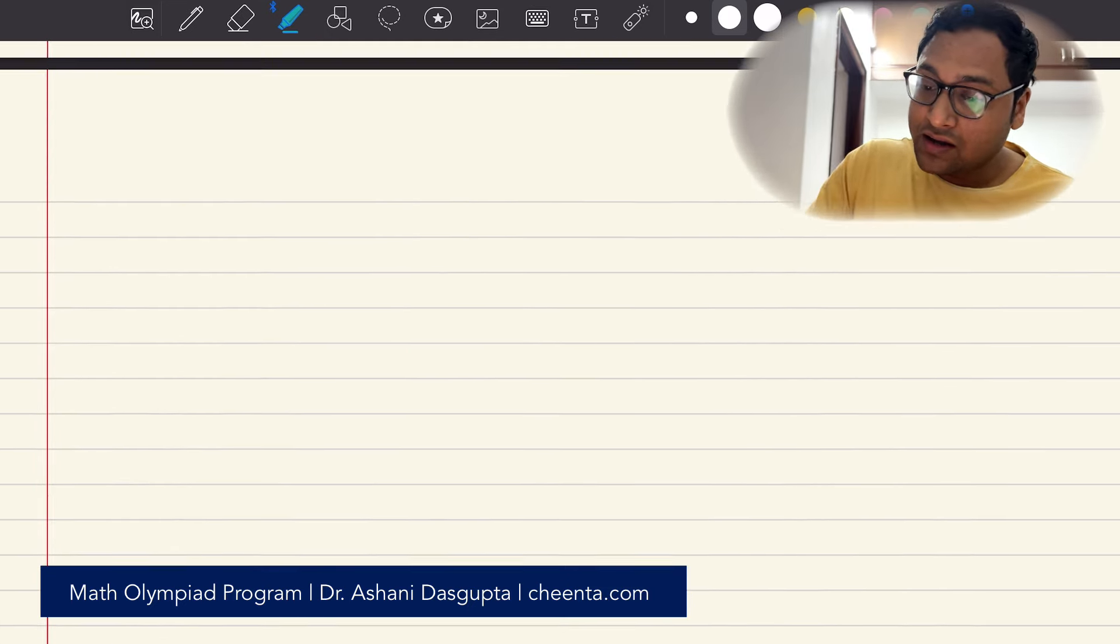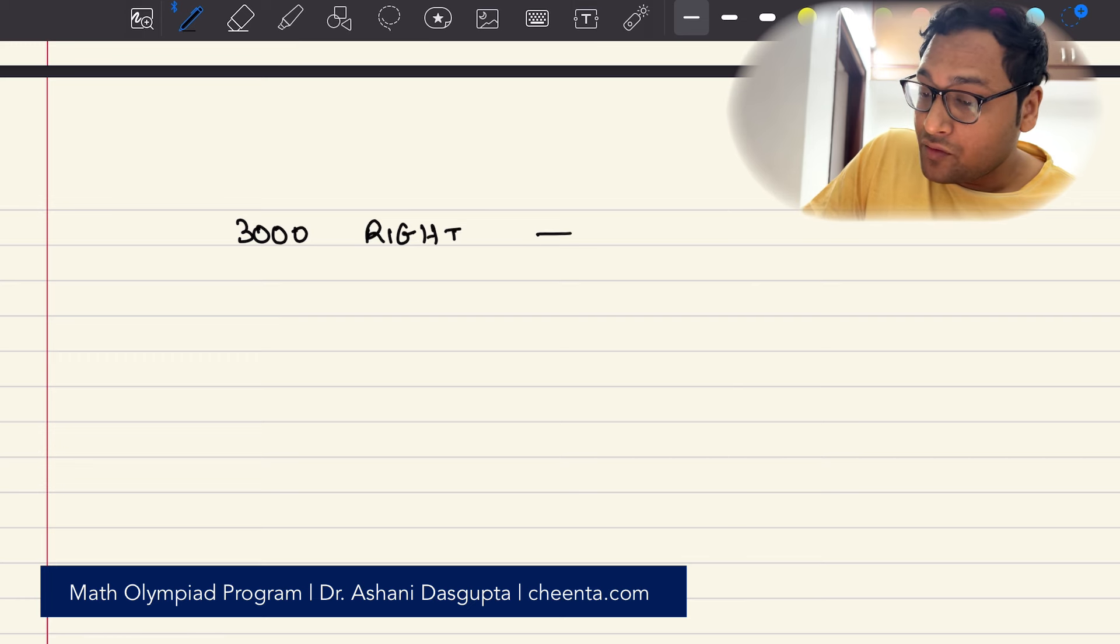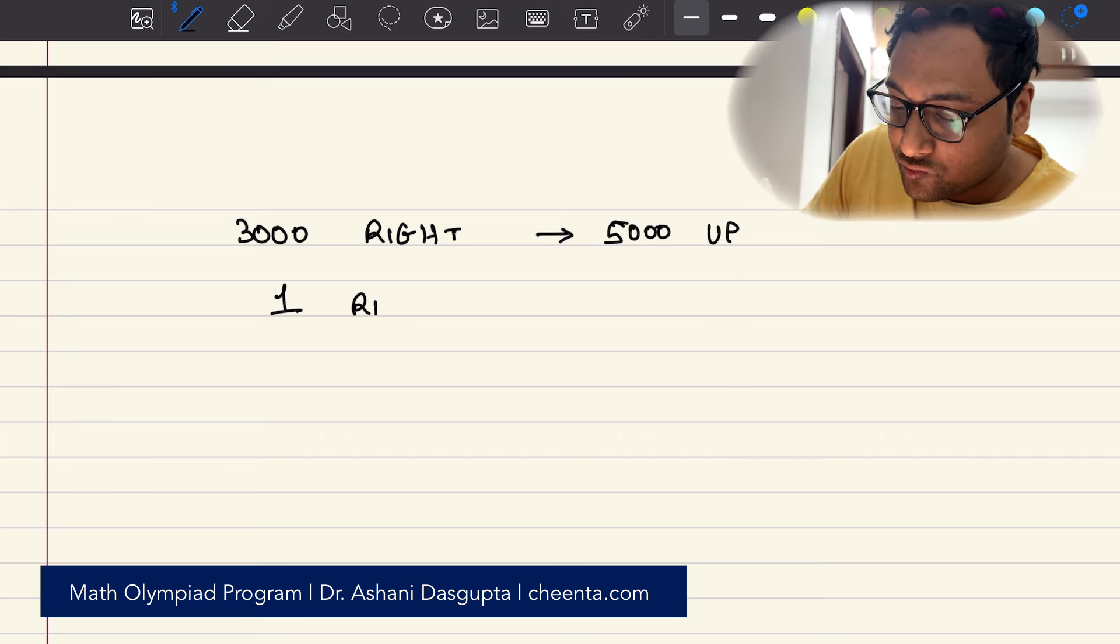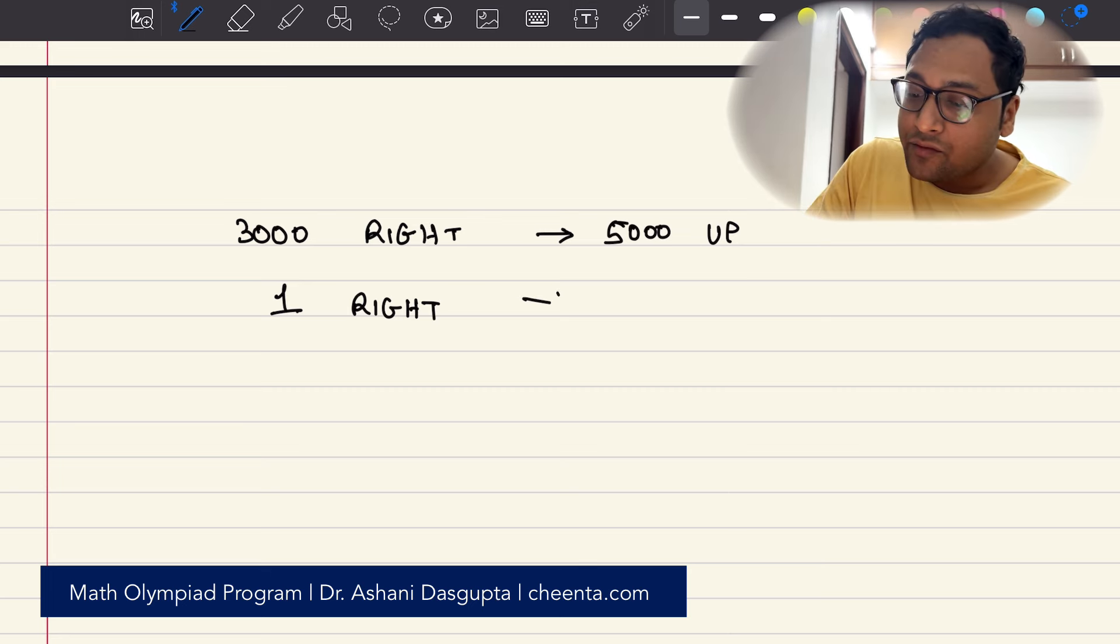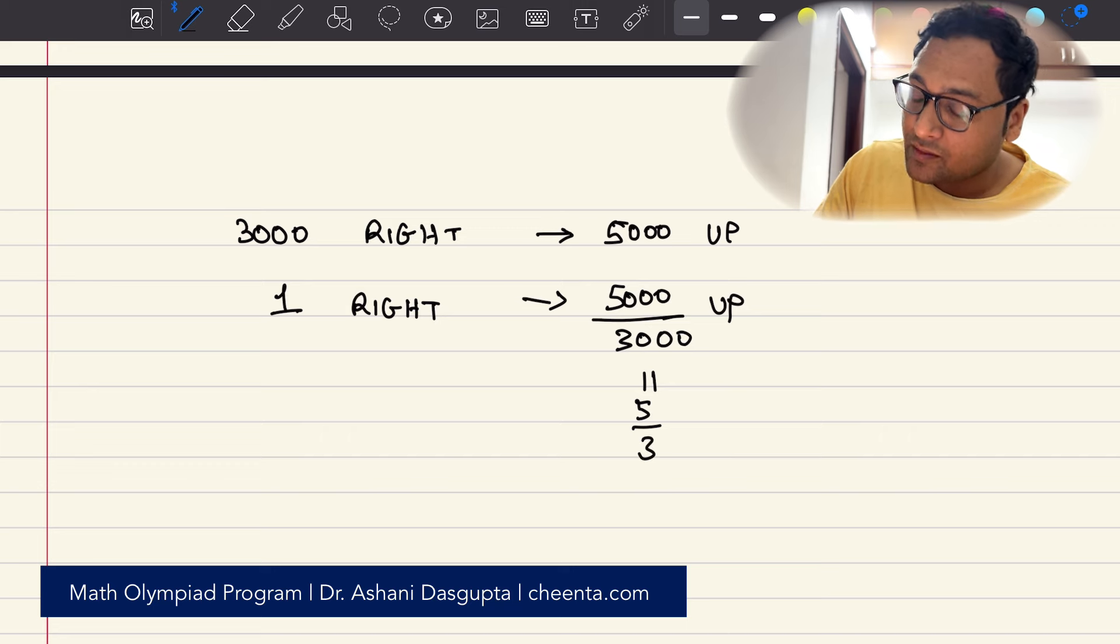So let's calculate this. For 3000 right movement, we have 5000 up moves, right? So for one right movement, one movement to the right, we have 5000 by 3000 up move, which is 5 by 3.